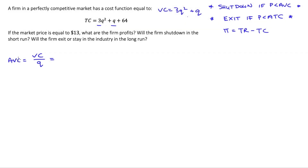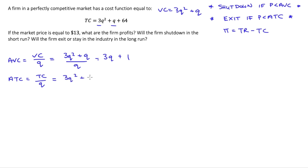Substituting into the AVC formula: (3Q squared plus Q) divided by Q. The Qs cancel, giving us AVC equals 3Q plus 1. Average total cost (ATC) is total cost divided by quantity: (3Q squared plus Q plus 64) divided by Q, which equals 3Q plus 1 plus 64 over Q. That first part, 3Q plus 1, is just our average variable cost, plus 64 over Q.